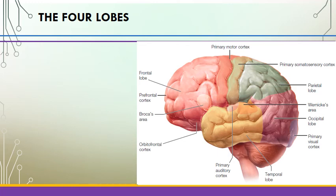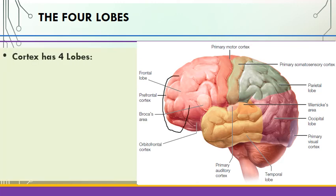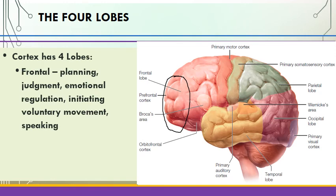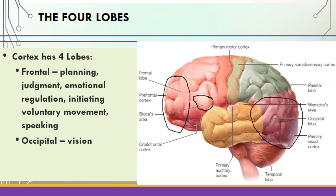The outer surface of the brain, the cerebral cortex, is divided into four lobes, each handling different parts of your overall daily experience. The frontal lobe, located in the front, handles judgment, emotional regulation, initiating voluntary movement, and speaking — particularly through an area known as Broca's area. The occipital lobe, in the back, is primarily devoted to vision. A large portion of the brain is devoted to processing what we see, because we are very visual creatures.